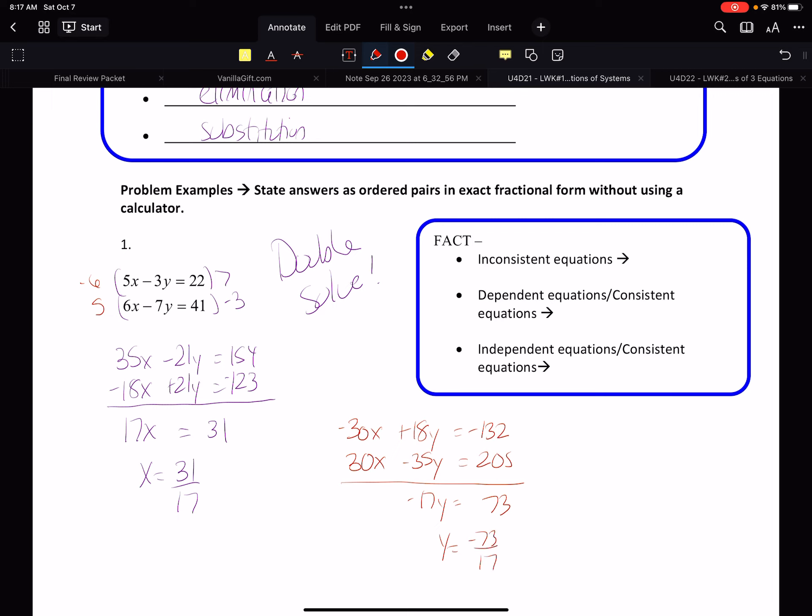Imagine if you solve for y first and sub that in. That would be even grosser. So by solving it twice, we avoided having to work with our fractions. We avoided having to work with more difficult situations. So double solve method. Avoid the ugliness. We get a one point answer. It is a consistent independent answer.